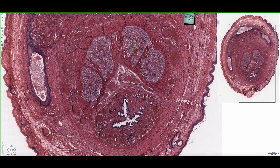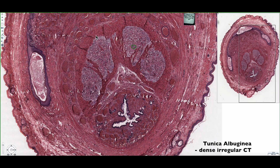Surrounding all three of these erectile tissue masses we can see this dense irregular connective tissue that surrounds all three of these structures. We can notice that this dense connective tissue is thicker around the corpus cavernosum. This is the tunica albuginea and it surrounds all three of these erectile tissue masses, being thicker around the corpus cavernosa compared to the corpus spongiosum.